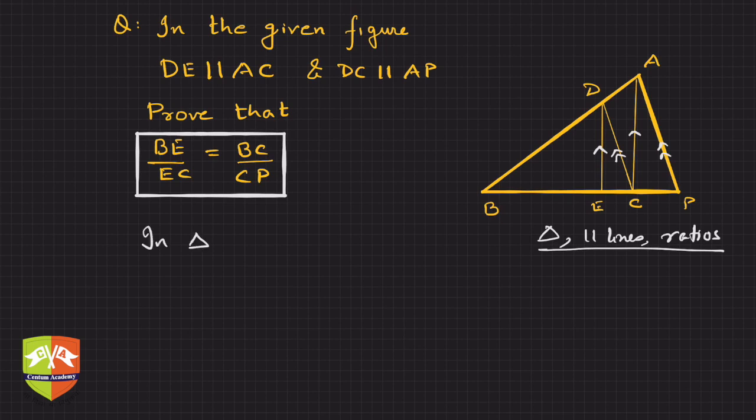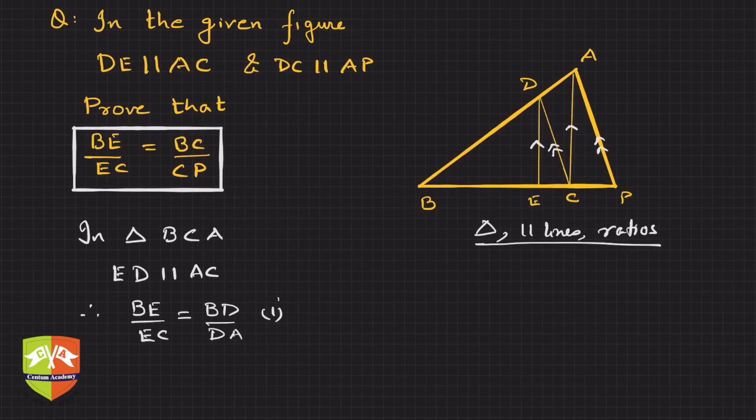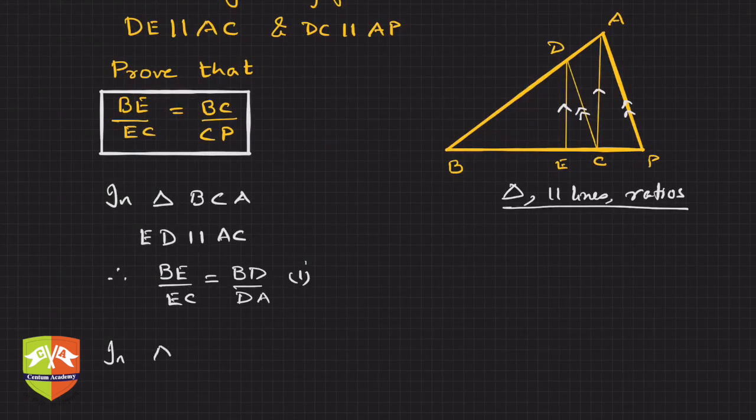In triangle BCA, since ED is parallel to AC, therefore we know BE upon EC will be equal to BD upon DA, right? Point number one. Secondly, now I'm writing here in triangle BPA, again by BPT.